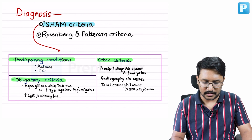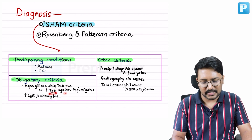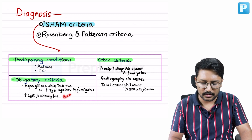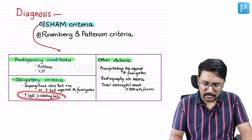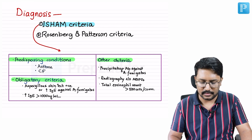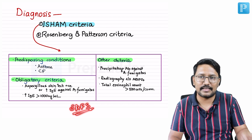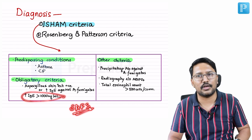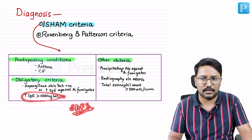To summarize the obligatory criteria: Aspergillus skin test is obligatory; IgE specifically directed against A. fumigatus is obligatory; and total serum IgE more than 1000 nanograms per ml is obligatory. If IgE is not more than 1000 but the rest of the criteria are met, we call it severe asthma with fungal sensitization (SAFS). The difference between ABPA and SAFS is the IgE level — less than 1000 in SAFS, more than 1000 in ABPA.